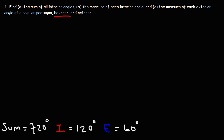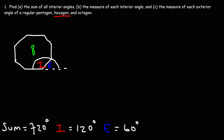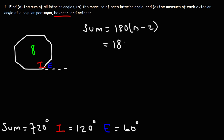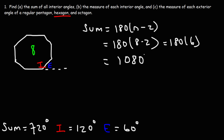Now let's move on to the octagon, which has 8 sides. Here is one of the 8 interior angles, and if we extend one side, we get the exterior angle — they form a linear pair. Let's calculate the sum of all the angles: 180 times n minus 2, where n is 8, so 180 times 6. The sum of all of the interior angles is 1080 degrees.